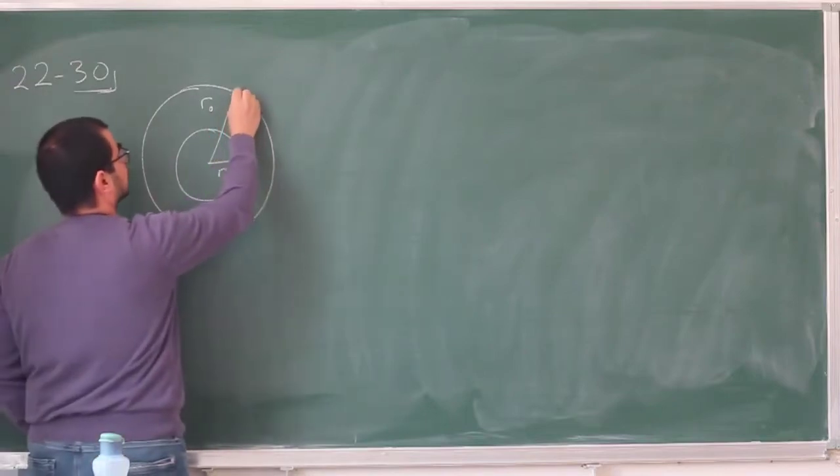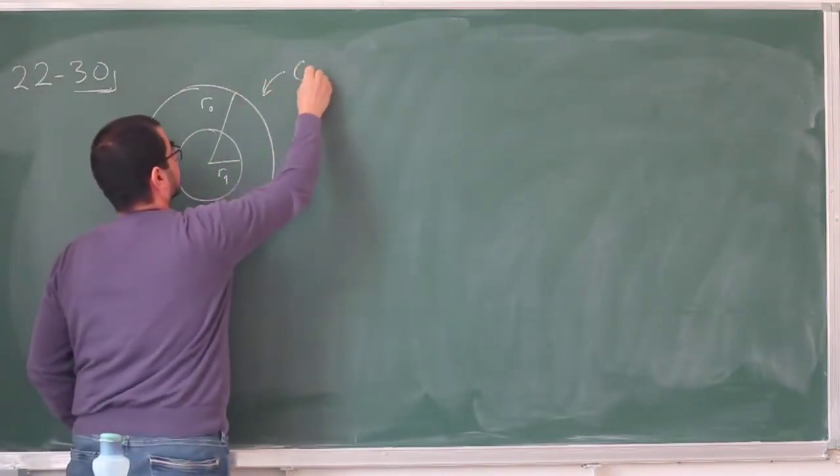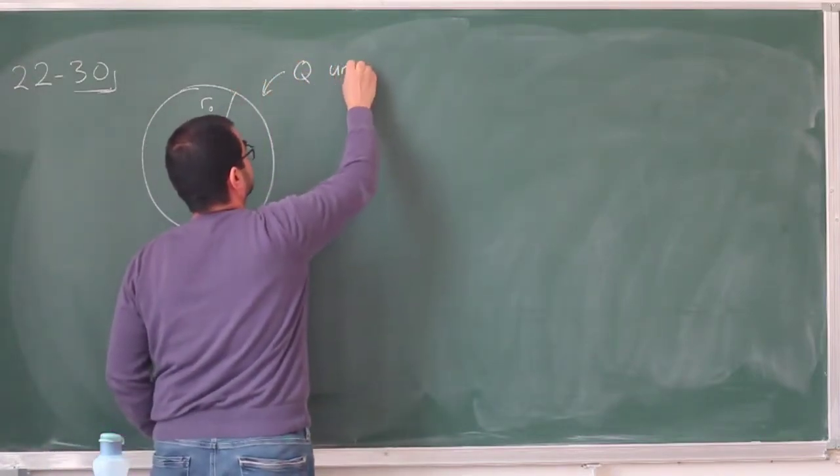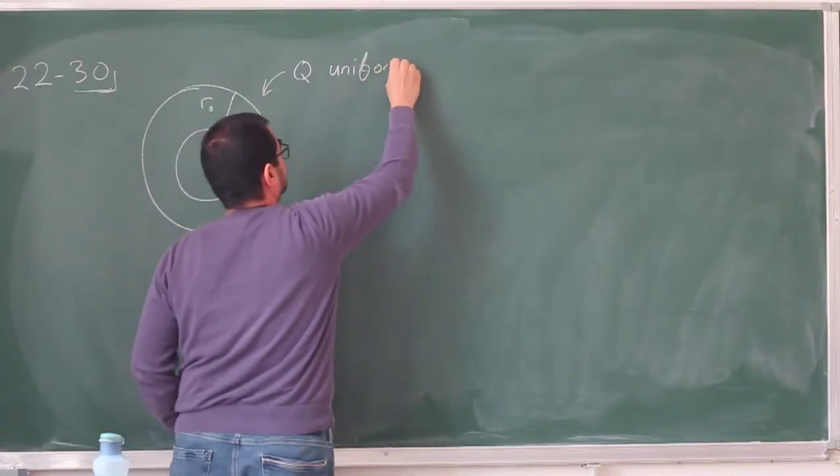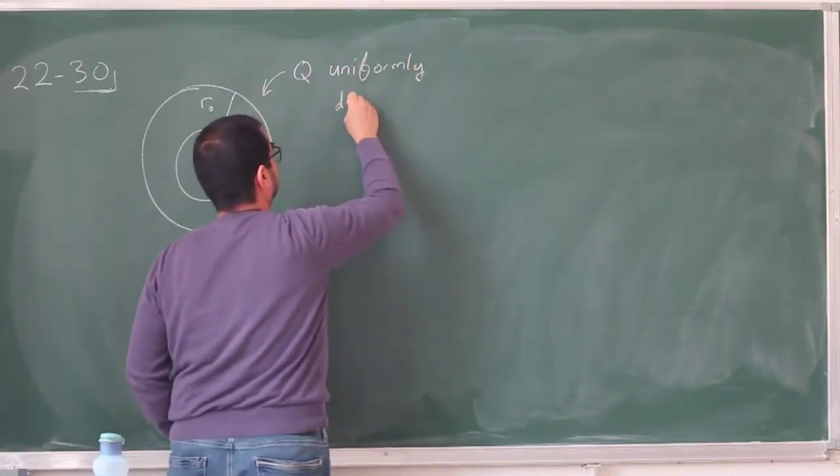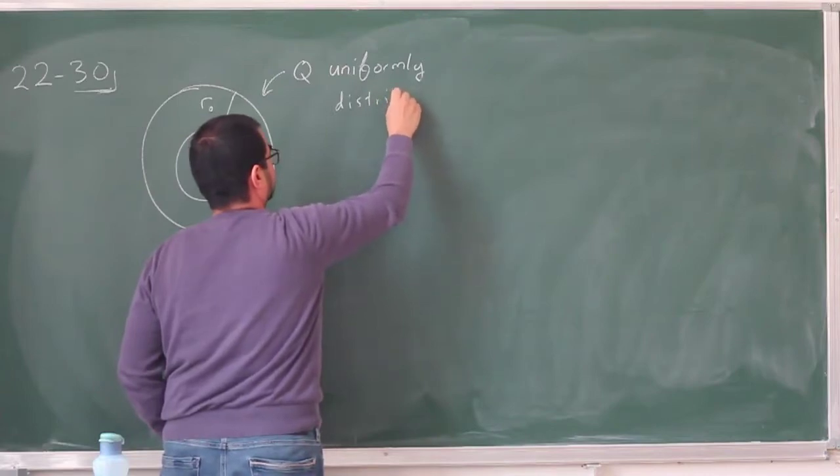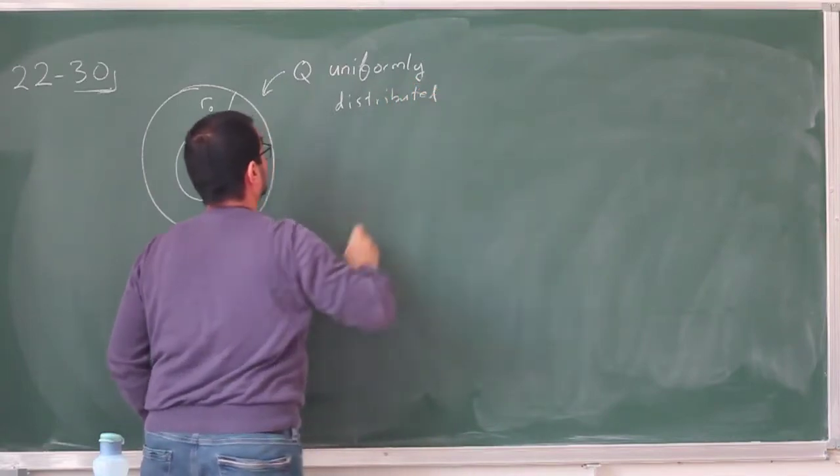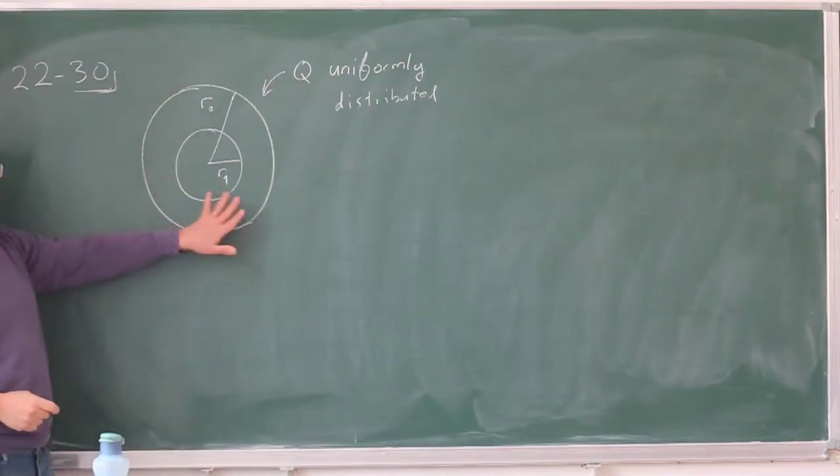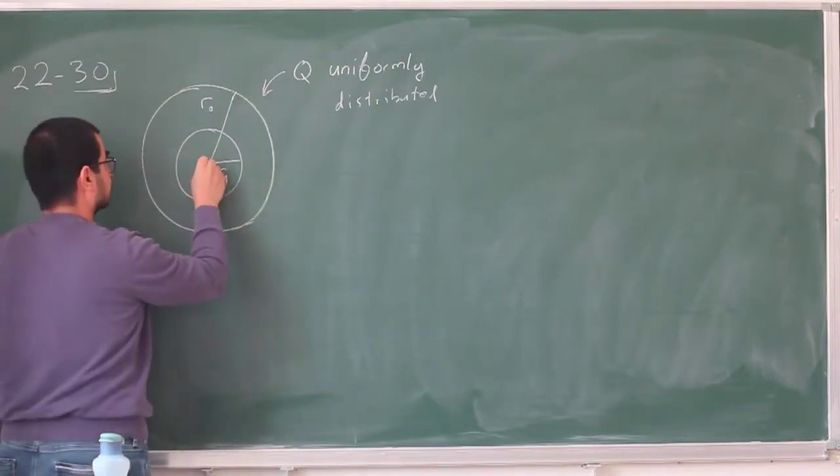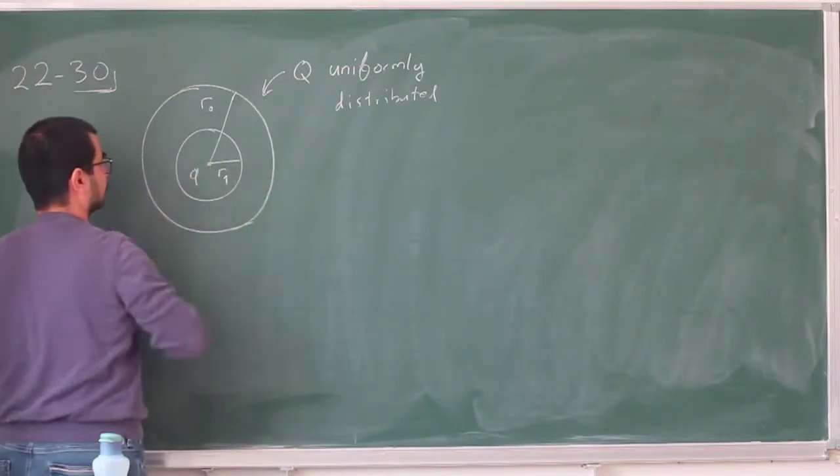And we are told that there is some charge Q that's uniformly distributed over this. And in addition to this capital Q uniformly distributed over this spherical shell, at the very center we have a charge, small q.